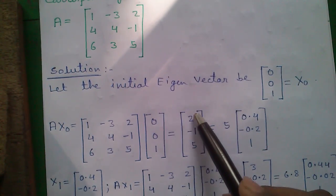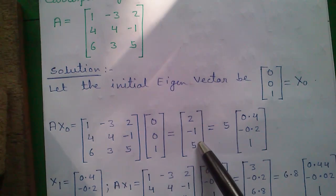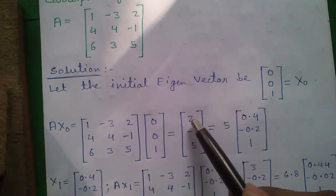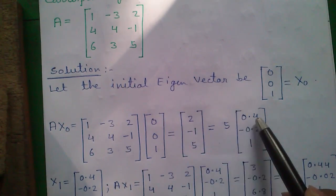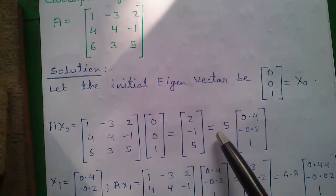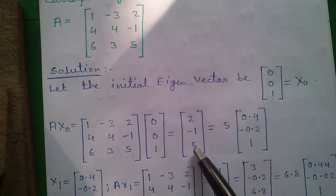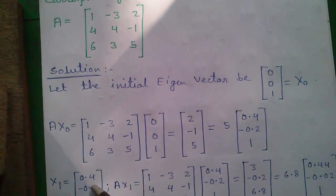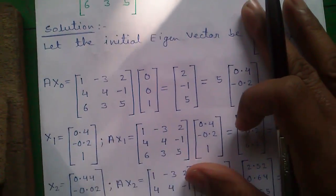Now we will take out the numerically largest value in this matrix. The numerically largest value is 5, which is taken out and all the numbers are divided by 5. So 2 divided by 5 equals 0.4, -1 divided by 5 equals -0.2, and 5 divided by 5 equals 1. This will become our x1 value, our next eigenvector.